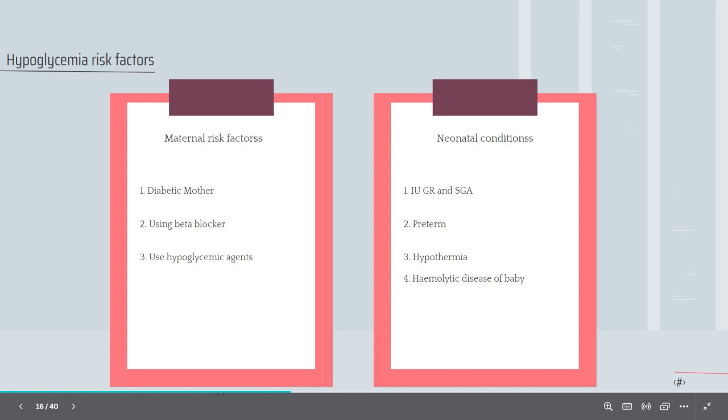Neonatal conditions: IUGR and SGA due to depleted stores. Preterm due to depleted stores. Hypothermia, increased utilization of glucose. Unwell baby, sepsis, increased utilization of glucose. Suspected endocrine condition, hemolytic disease of baby, increased utilization of glucose.